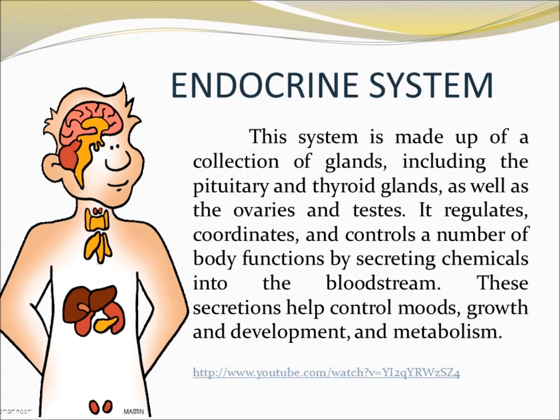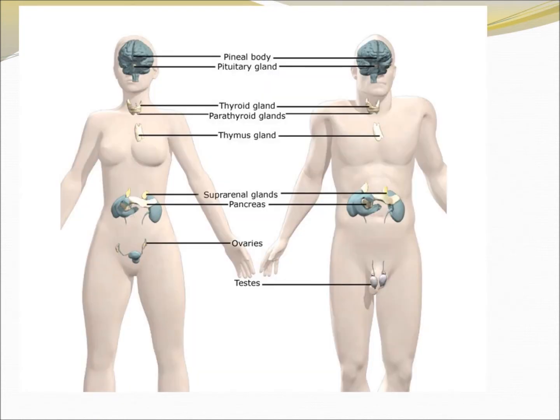Endocrine system. This system is made up of a collection of glands including the pituitary and thyroid glands, as well as the ovaries and testes. It regulates, coordinates, and controls the body parts. The glands are shown here — you can view the picture and the parts here.